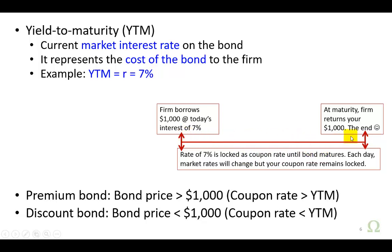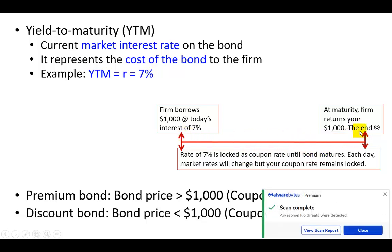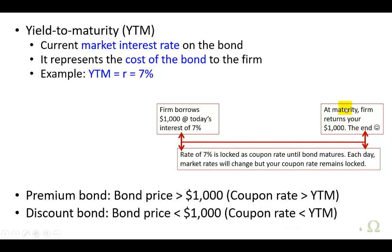Upon maturity of the bond, you're going to get your $1,000 back — the money that was borrowed from you at the outset — and of course whatever interest payment that's left to make. Nevertheless, over the period of the bond, each day market interest rates may change, even though your coupon interest, which was locked in at the time you took out the loan, is locked until the bond matures.